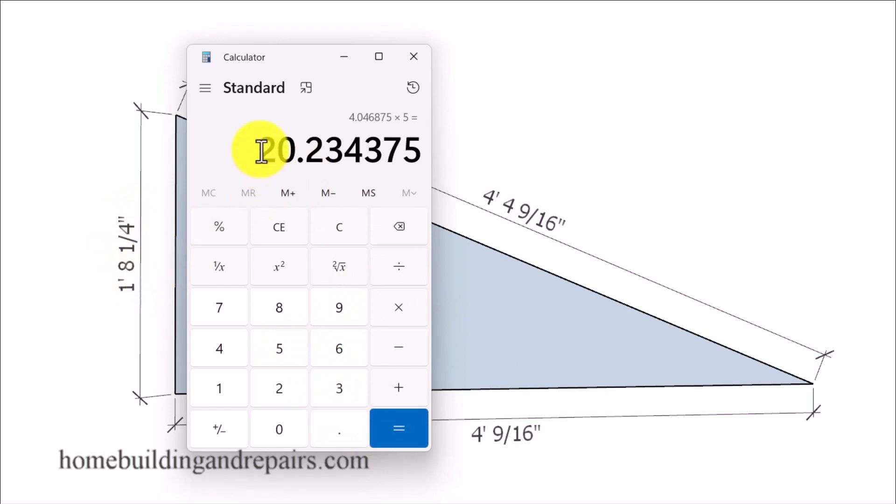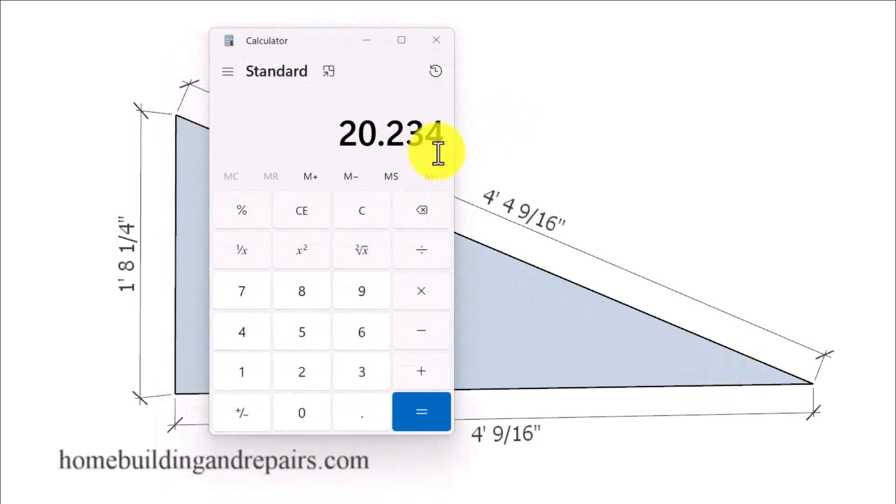And then I can either convert this number to feet or I can convert this number to inches and then use the Pythagorean Theorem to calculate the hypotenuse of the triangle. So to convert this number to feet I'm simply going to divide it by 12. That's going to give me 1.68. I'm going to use 1.686.